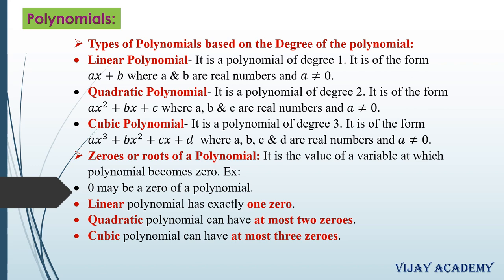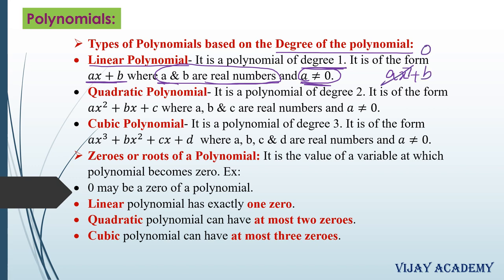Moving on to types of polynomials based on degree: if the degree of the polynomial is 1, then such polynomials are called linear polynomials. The standard form is ax plus b, where a and b are real numbers and a is not equal to 0. If a becomes 0, the ax term becomes 0, leaving only b, which is a constant — and a constant is not a linear polynomial since its highest power is 0.